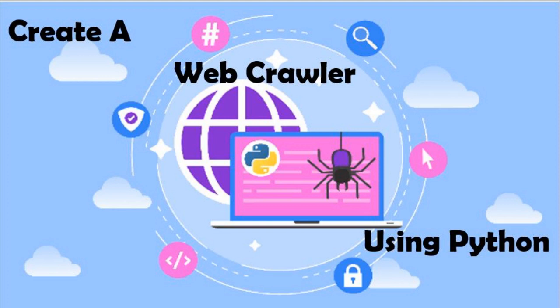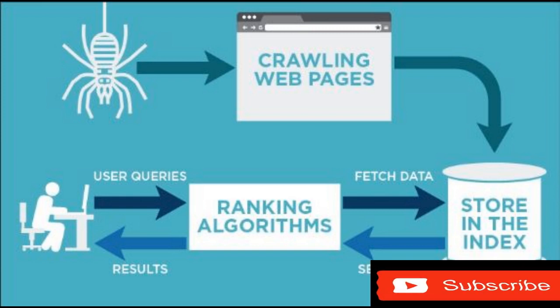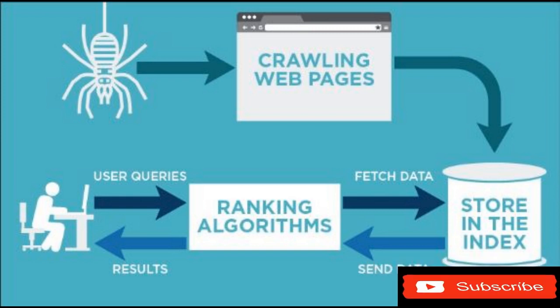Hello and welcome to this video where we are going to talk about web crawling. More specifically, we are going to develop a Python program to perform web crawling. Web crawling refers to a systematic way of navigating through a website, starting from the seed URL, also known as the main URL, all the way to other sub-links that are found in that particular website, with the sole purpose of accessing the information contained in the website.